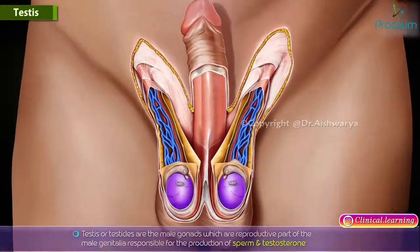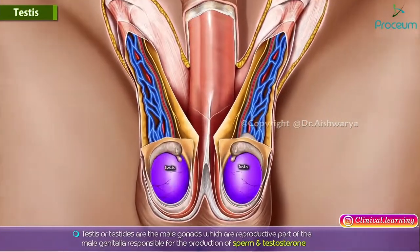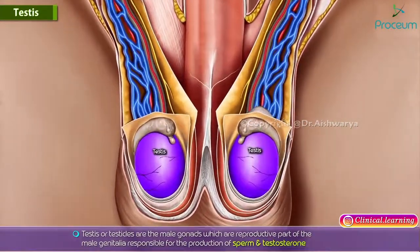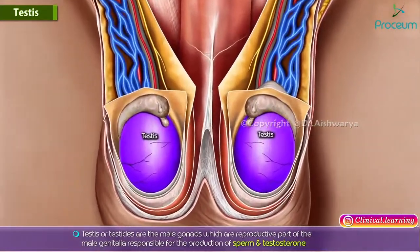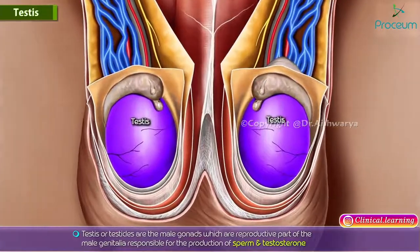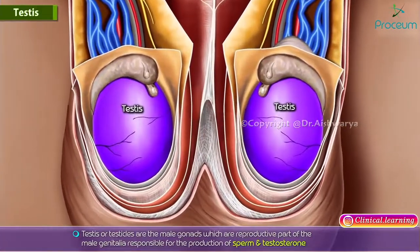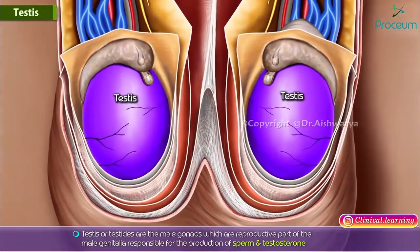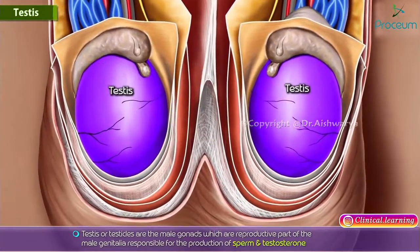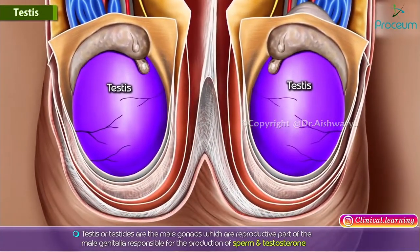The testis, or testicles, are the male gonads — the reproductive part of the male genitalia responsible for the production of sperm and testosterone.